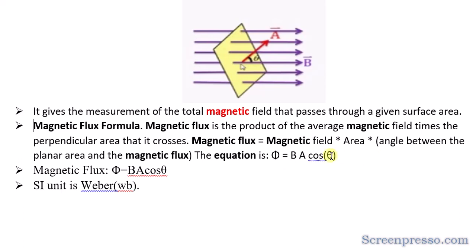You can substitute different angles — for example theta equals 90 degrees or 0 degrees — to understand how the flux behaves. Please try this as an assignment. The SI unit of magnetic flux is Weber, which is the unit used to measure magnetic flux.